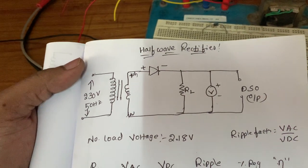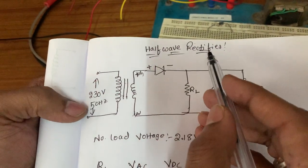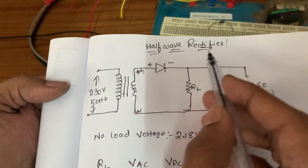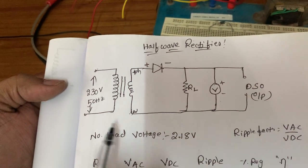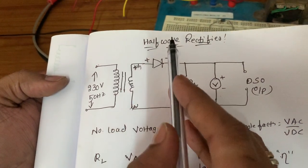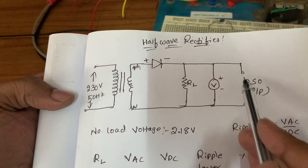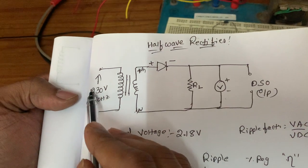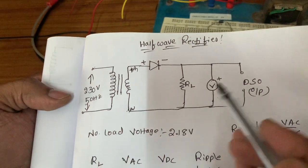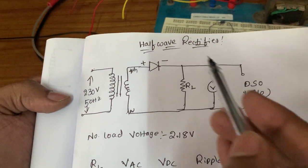Hello everyone, today we are going to conduct the half-wave rectifier experiment. This is the circuit diagram of the half-wave rectifier. In this half-wave rectifier, we will look at what waveforms we are getting — which waveform we are giving to the input and how we are getting the output waveform.